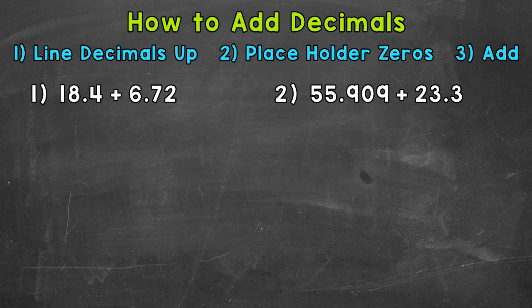So number 1, we're going to do 18 and 4 tenths plus 6 and 72 hundredths. Notice how the decimals are lined up. Now, it may look a little offset there, but we can use placeholder zeros to better align this and make it look a little more organized. Meaning, 18 and 4 tenths, we can put a zero in the hundredths place. That way, we look a little more lined up.